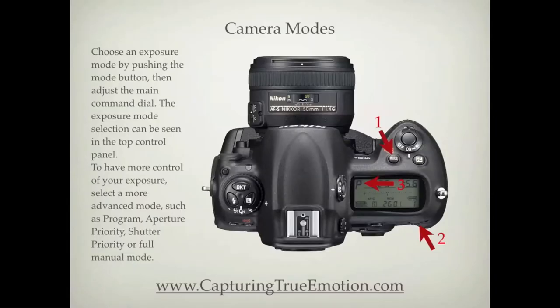Choose an exposure mode by pushing the Mode button, then adjust the main command dial. The exposure mode selection can be seen in the top control panel. To have more control of your exposure, select a more advanced mode such as Program, Aperture Priority, Shutter Priority, or Full Manual Mode.